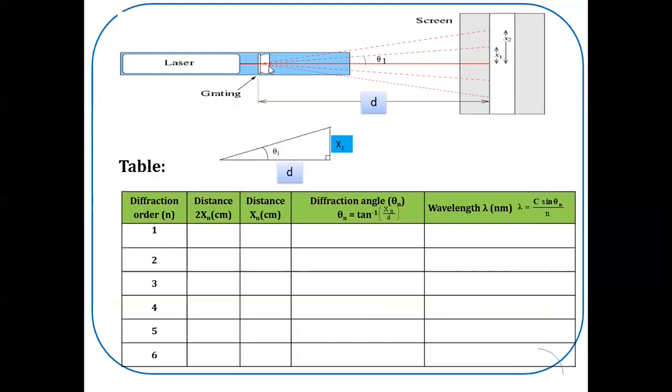If you observe here, this is the solid line for central maxima. The dotted line here is shown for 1st order maxima. If you observe, this forms a right angle triangle. Same thing has shown in a magnified way. Theta 1 is the angle between 1st order maxima and central maxima. x1 is the distance between these two. d is the distance between grating and screen.